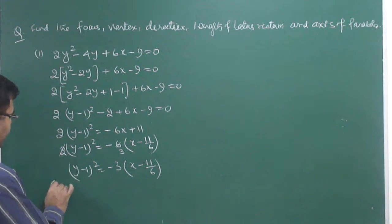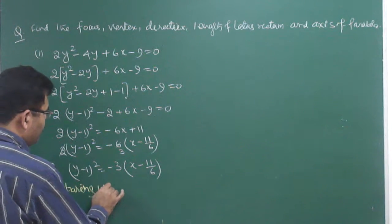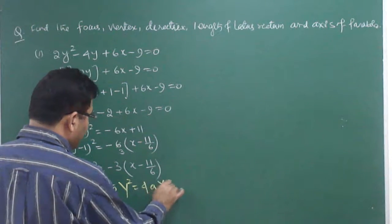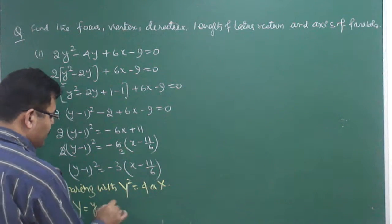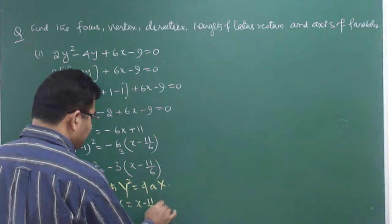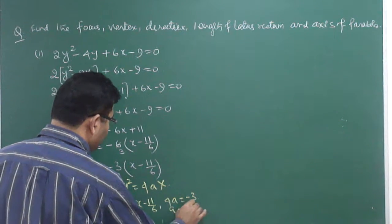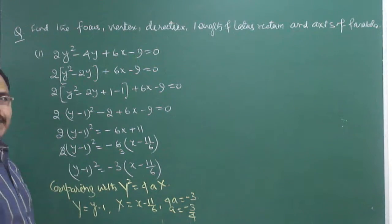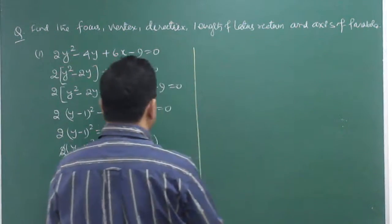Now we can compare this. Comparing with Y² = 4aX: capital Y = y - 1, capital X = x - 11/6, and 4a = -3, so a = -3/4.